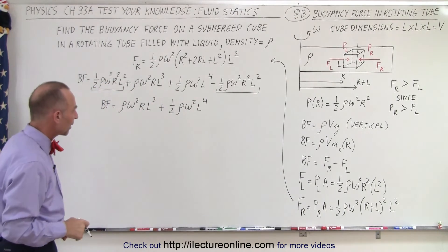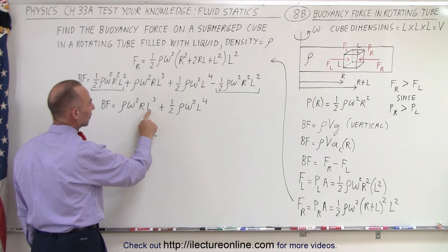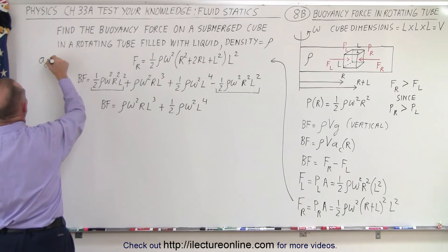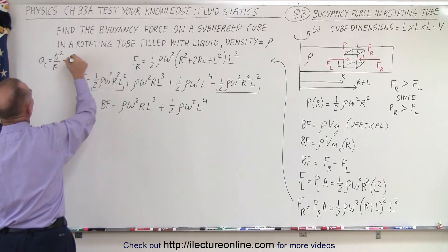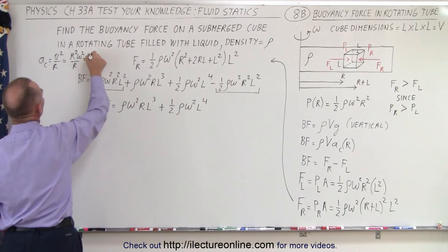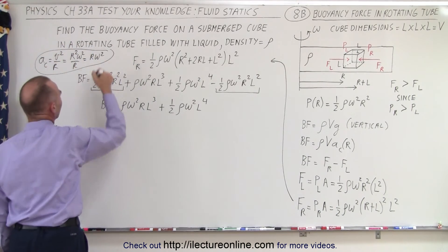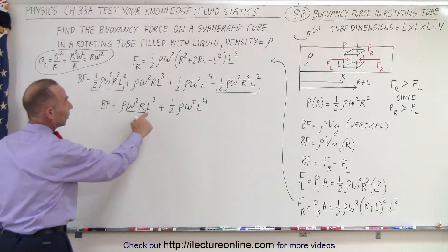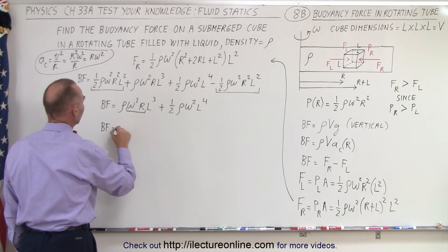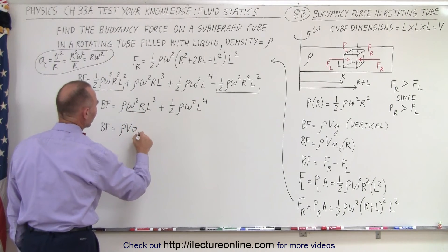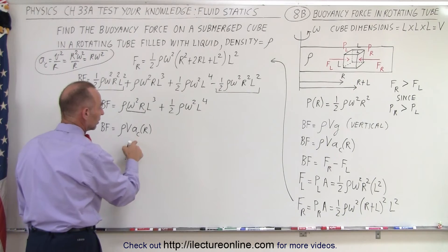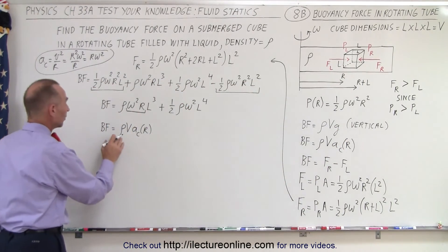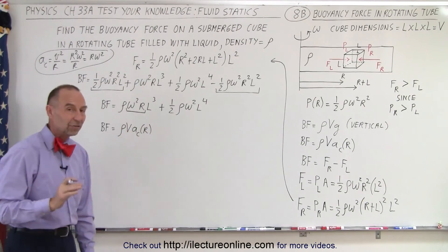We can identify key quantities here: L³ is the volume of the cube, and ω²r is the centripetal acceleration — since centripetal acceleration equals v²/r = r²ω²/r = rω². So the first term is density × volume × centripetal acceleration, which is a function of r. This is very similar to the vertical case of ρVg, except here acceleration is not constant but depends on r.